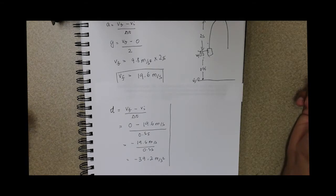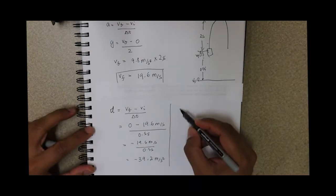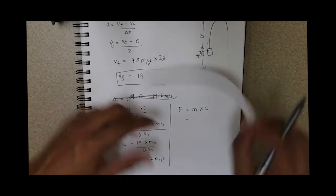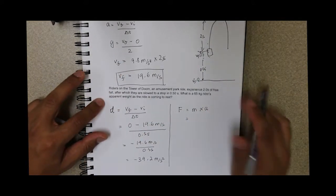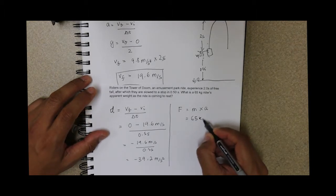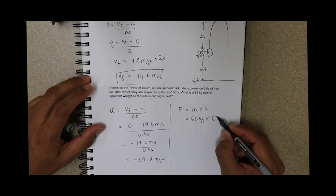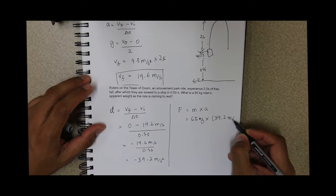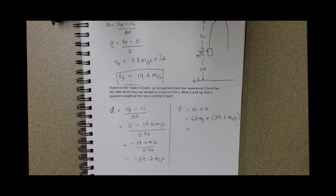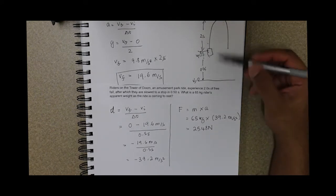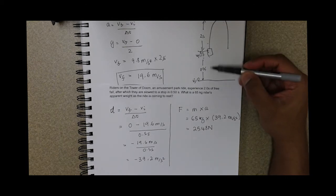Now, what is the force with which this person is effectively decelerated? Force equals mass times acceleration. The rider's mass is 65 kilograms and the deceleration as he comes to a stop is 39.2 meters per second squared. Multiplying those numbers — 65 times 39.2 — we get 2548 newtons.